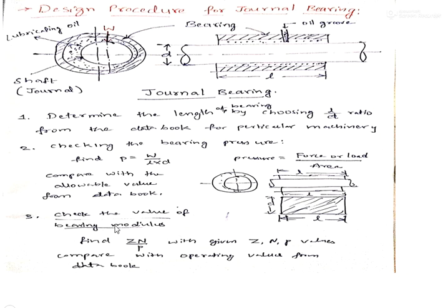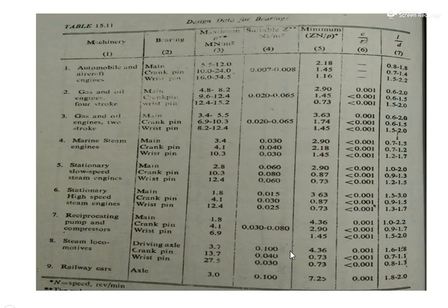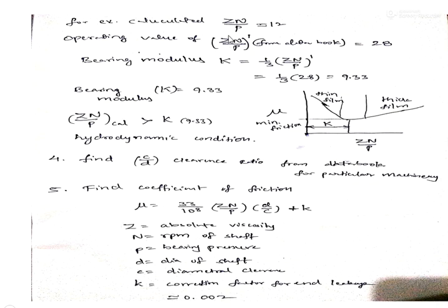Next, check the bearing characteristic number ZN/P, where Z is the absolute viscosity of the oil, N is the RPM, and P is the bearing pressure. With the given values, suppose the calculated ZN/P is 12 (example value). The operating value of ZN/P (denoted ZN/P dash) is taken from the data book and represents the operating values.